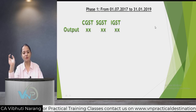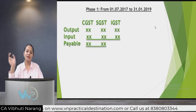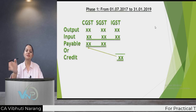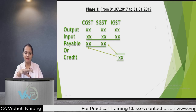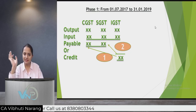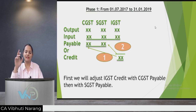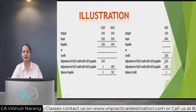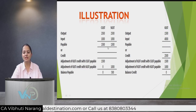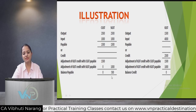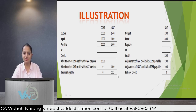Phase one (1st July 2017 to 31st January 2019): IGST credit was first adjusted with CGST payable, and if any IGST credit remained, it was adjusted with SGST payable. For example, with IGST credit of 2500 and CGST and SGST payable of 1500 each: first 1500 IGST credit offsets CGST payable fully, then the remaining 1000 offsets SGST payable, leaving 500 SGST still payable via challan.